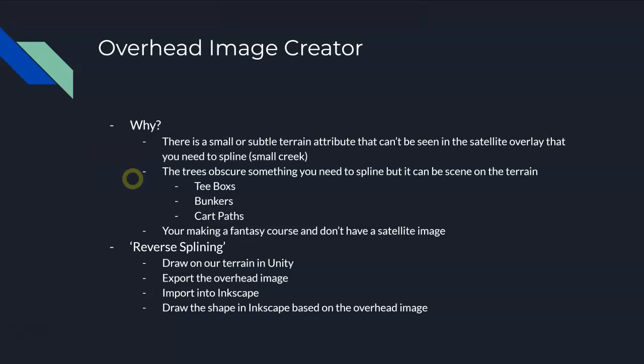Why do we use the overhead image creator? Maybe you're in a situation where there's a very small and subtle terrain attribute that can't be seen in your satellite overlay when you're in Inkscape, so you can't really see where to spline it. A good example of that is a very small creek that runs through a meadow or a weeded area. When you look at the terrain in Unity, you can obviously see that that creek is down at the bottom of the terrain, but from overhead you can't see that. So when you spline, you want your spline in Inkscape to be down inside that valley, but you can't see that. This is a use case where you can find the bottom of that, mark it up, and then spline it in Inkscape.